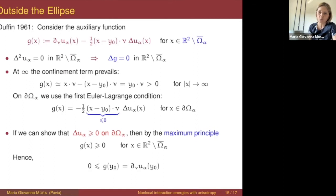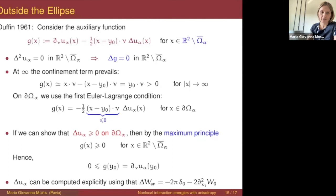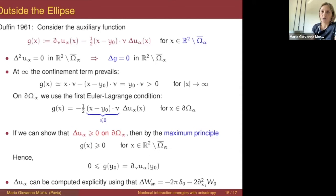To conclude, one has only to show the sign condition on the Laplacian, and this can be proved using the expression of the Laplacian of the anisotropic kernel and the explicit Kirchhoff formula for the logarithmic potential of an ellipse. This is the idea of the proof.